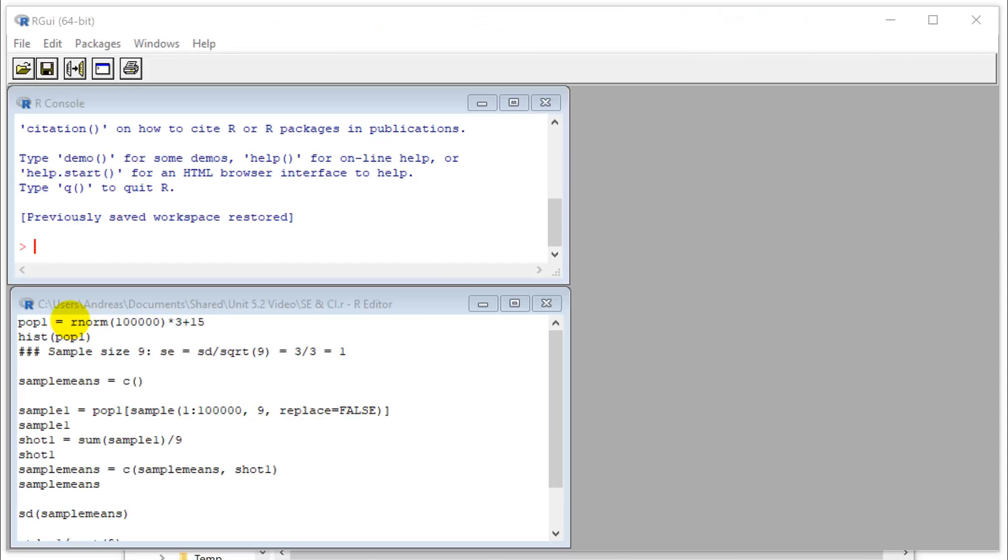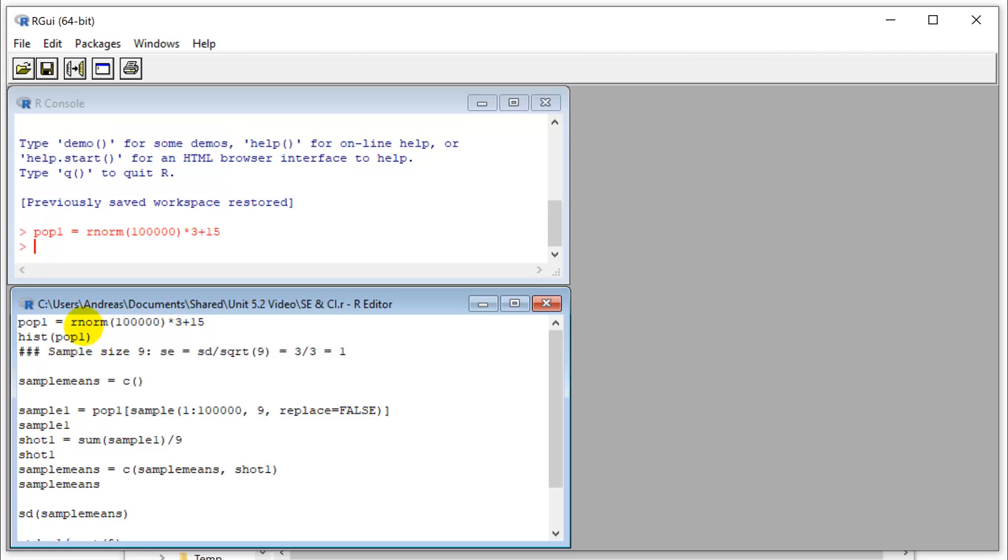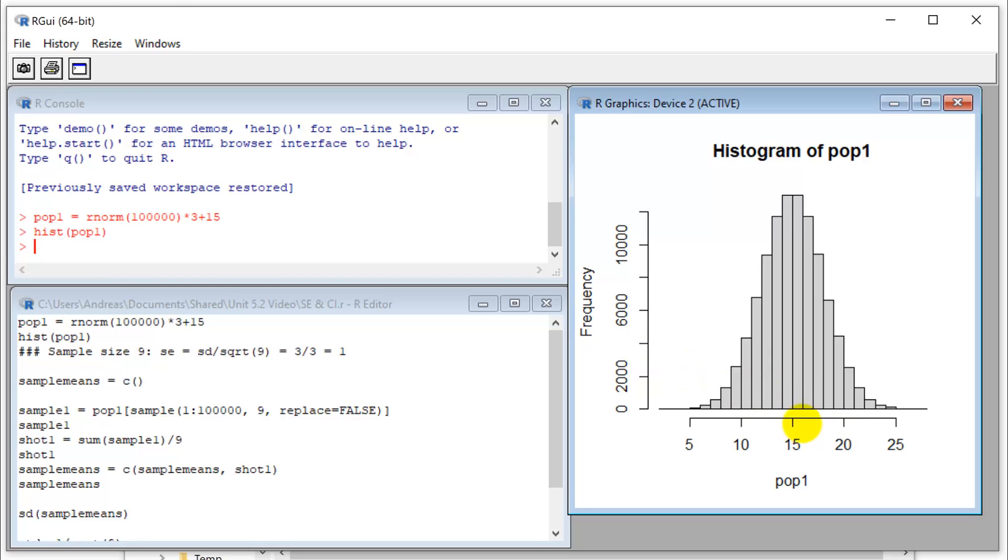Let's try this. So the code should be looking pretty familiar. We do the same thing as we've done multiple times now. We create a normal distribution with 10,000 trees, standard deviation of 3, and a height of 15. And so let's take a look. There it is. Mean of 15, standard deviation about 3.